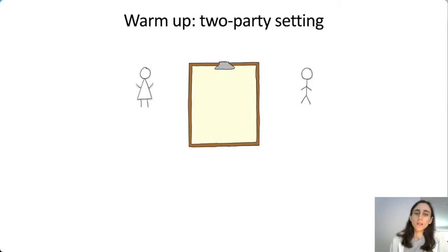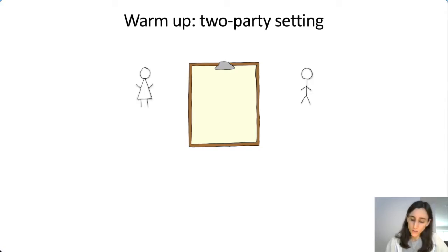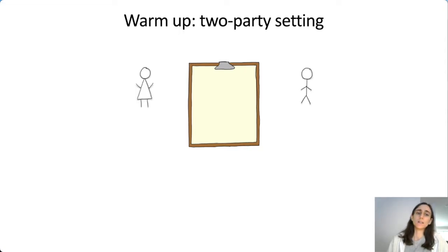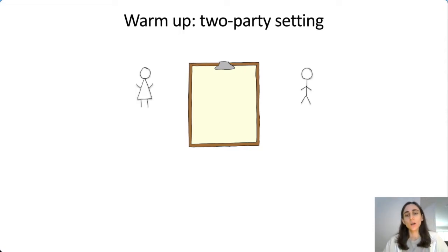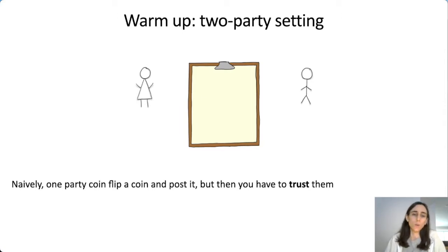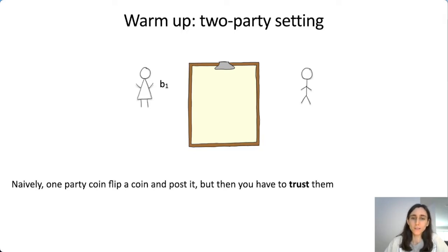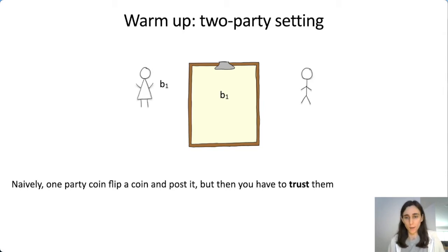As a warm-up, let's consider the two-party setting. We have Alice and Bob, and the goal is for them to flip an unbiased bit. As a naive attempt, the first thing we might think to do is just have one party flip a coin and post it on the bulletin board. Obviously this is a problem because then you have to trust Alice to flip an unbiased coin.